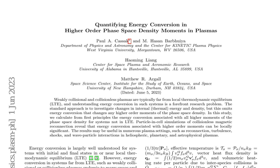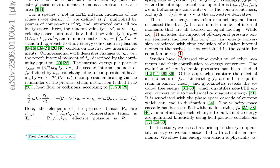The traditional approach, described by the equation for the time evolution of internal energy per particle, accounts for compressional work, incompressional heating, heat flux, and collisions. However, it fails to capture energy conversion related to the time evolution of non-isotropic pressures, free energy, and velocity space cascades, which are crucial for understanding energy conversion in plasmas far from LTE.